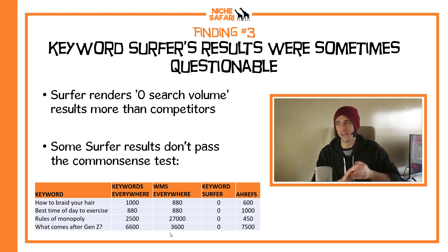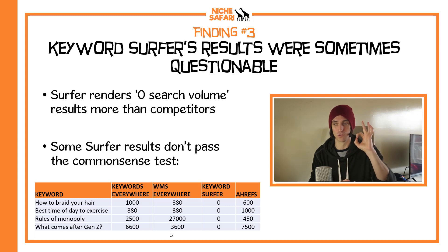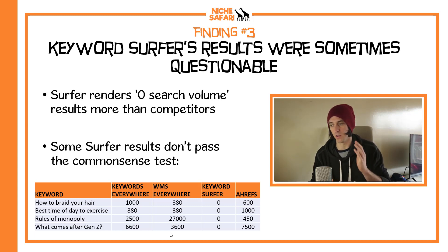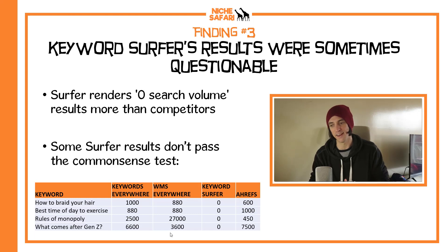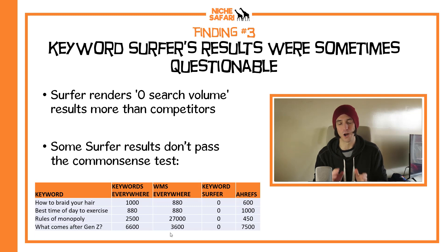Finding number 3: Keyword Surfer's results were really questionable quite often. From this study, I'm starting to think Keyword Surfer is the least reliable of these tools. It came up with zero search results a lot more often than all the competitors, and in many cases these zero search results just don't pass the common sense test. For example, how to braid your hair — obviously people search that term. Keywords Everywhere says 1,000 searches a month, WMS Everywhere 880, Ahrefs 600, Keyword Surfer 0. Same thing goes for best time of day to exercise, the rules of monopoly, and what comes after generation Z — all the other tools said there were plenty of results and Keyword Surfer said zero. That doesn't pass the common sense test, so I am a bit wary of Keyword Surfer.